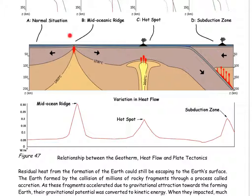This is where the two plates are pulling apart. Another high point is at what's called hot spots. These are places within the interior of a plate where volcanoes occur. And the last high point is at subduction zones where magma is rising to form volcanoes.